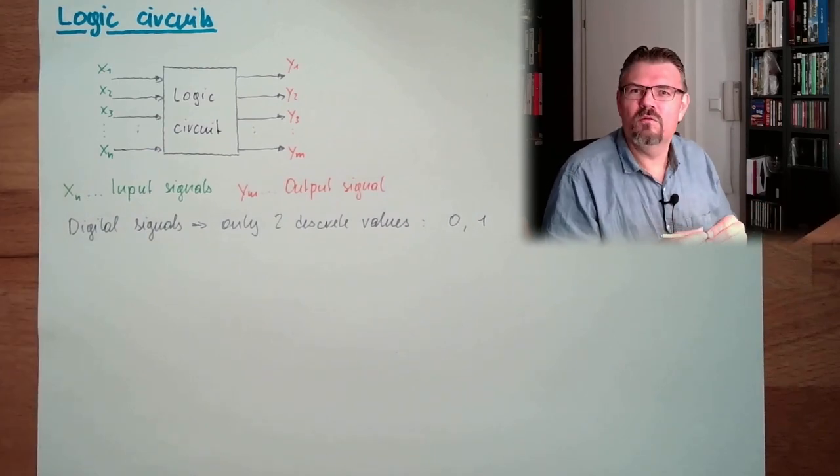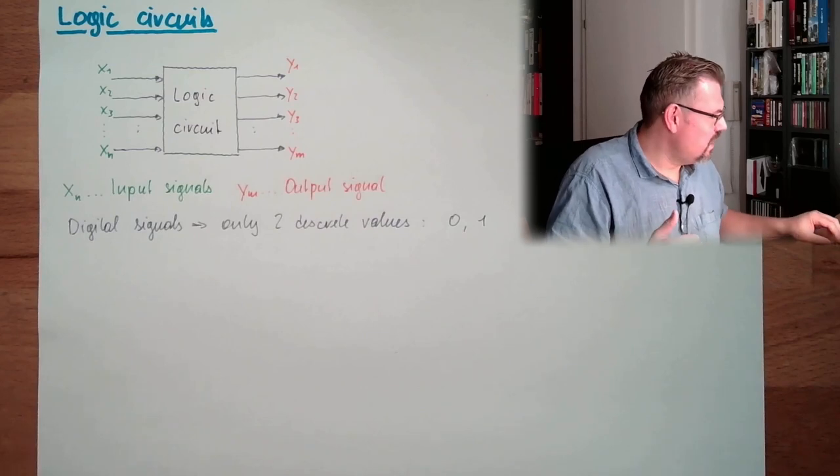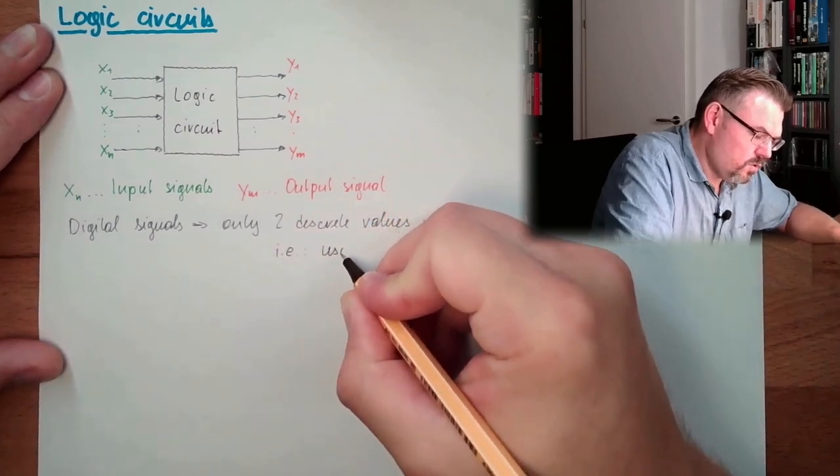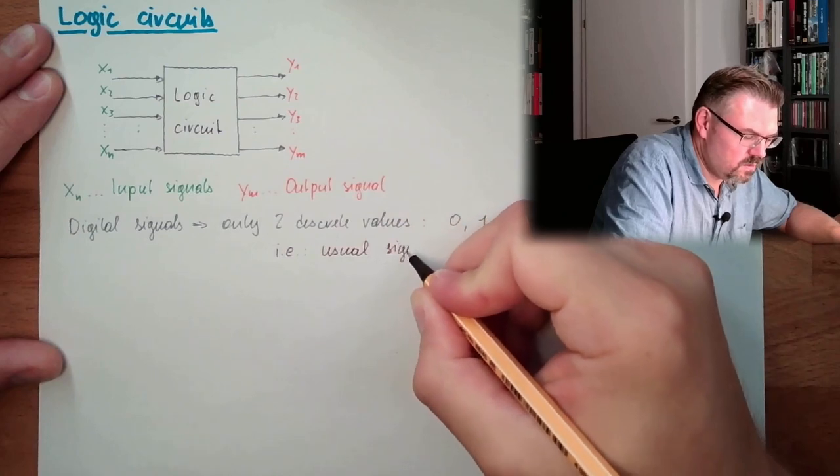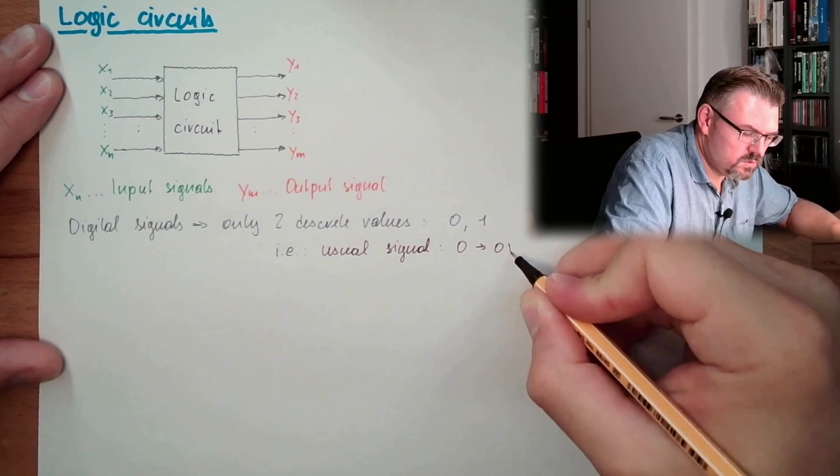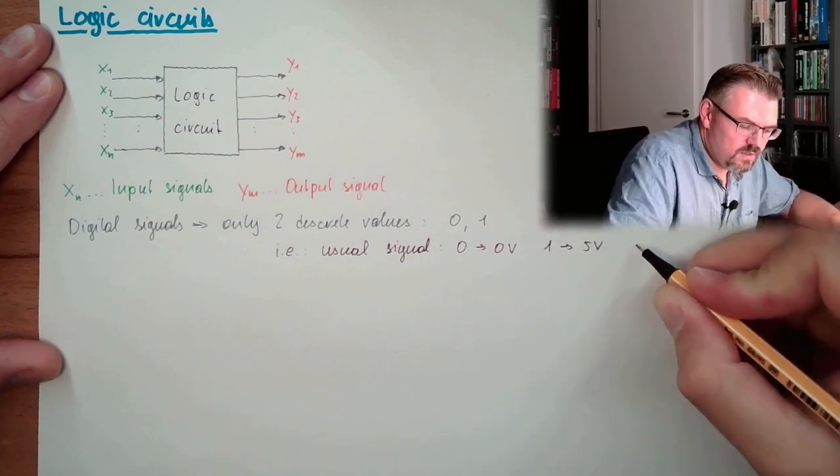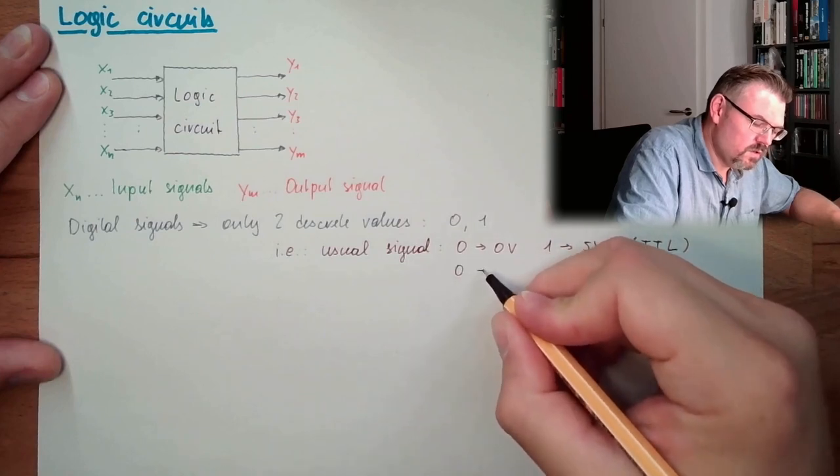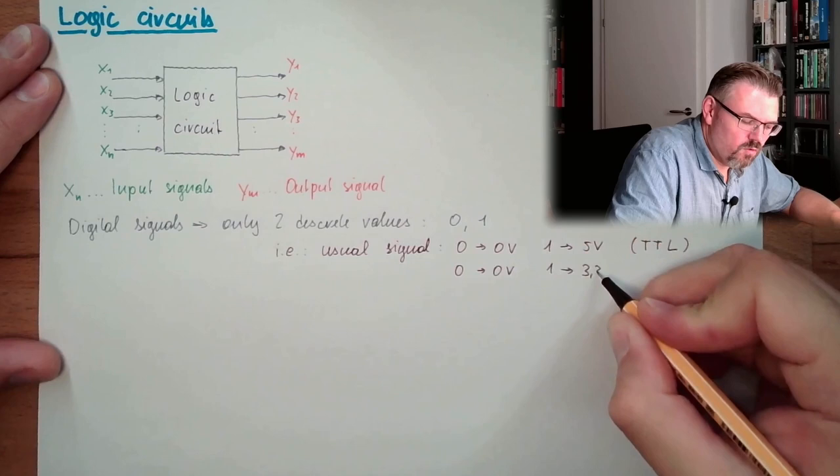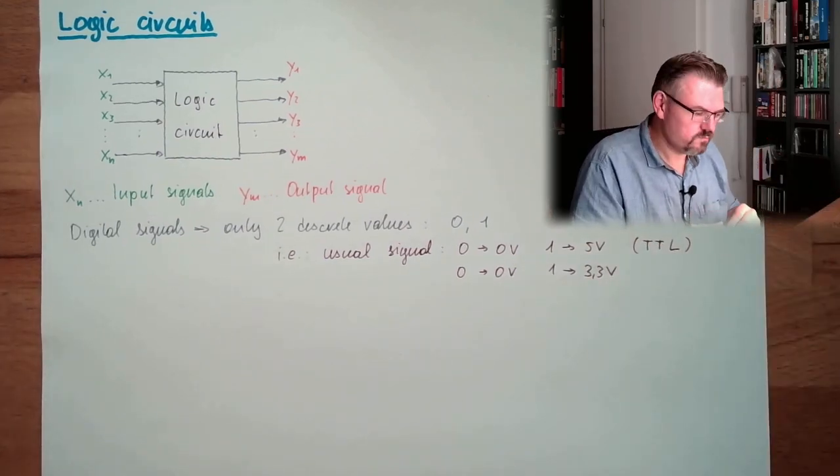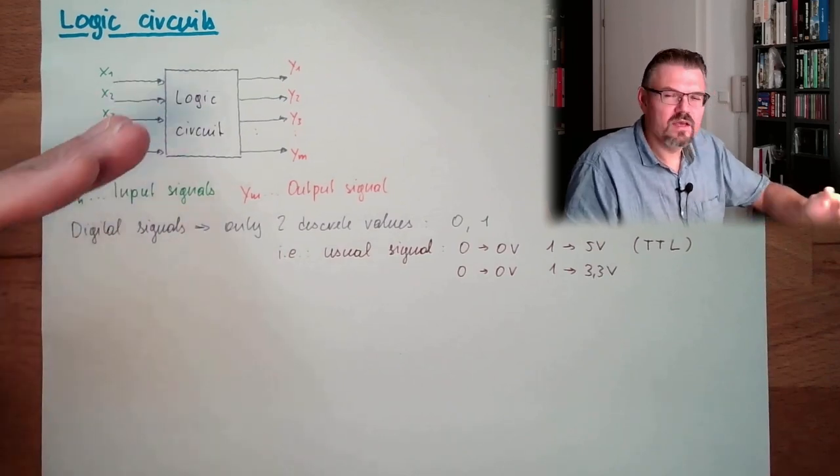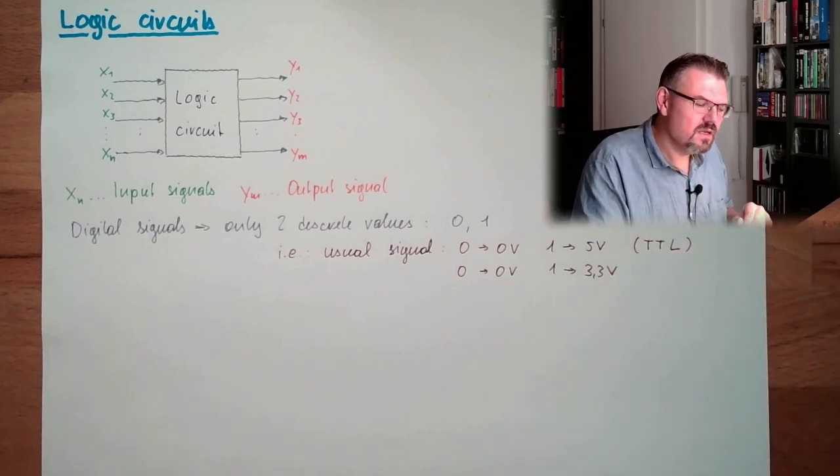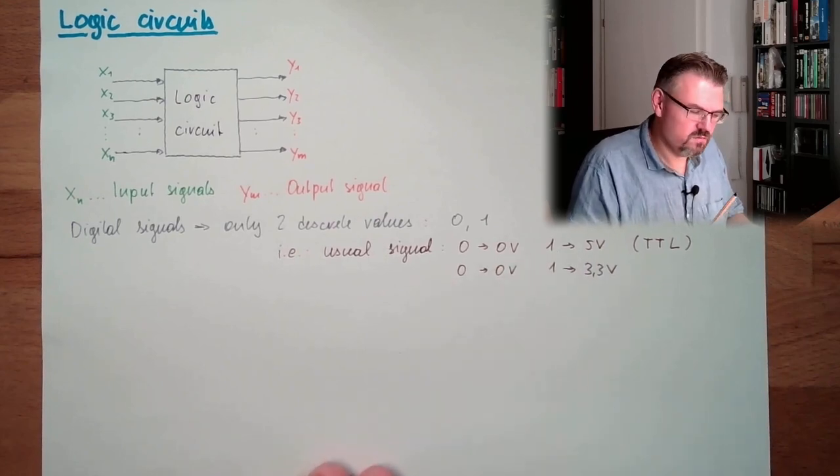And they are called usually zero and one. What it means in real world - the real world is not digital, right? The real world is analog. So usual signals are, in example, zero equals zero volt, and one is five volt. This is called TTL. Or zero is zero volt, and one is three point three volt. That's a newer type of logic. These are usual signals. So usually they are voltage signals. And one discrete voltage - there is of course tolerance around this - is reflecting one, and the other discrete voltage is reflecting zero. This is how this is working.